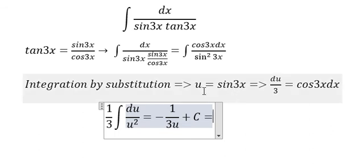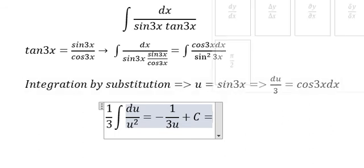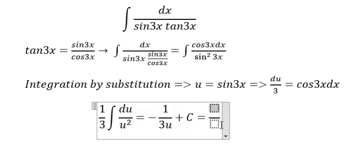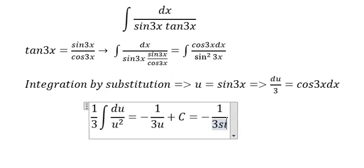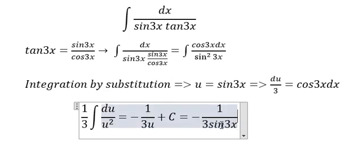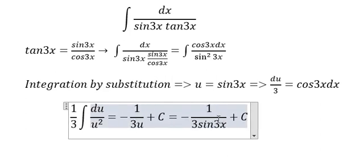We convert u back to x. This gives us minus 1 over 3 sin 3x plus c. This is the final answer.